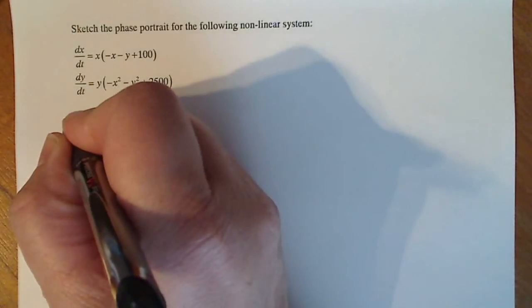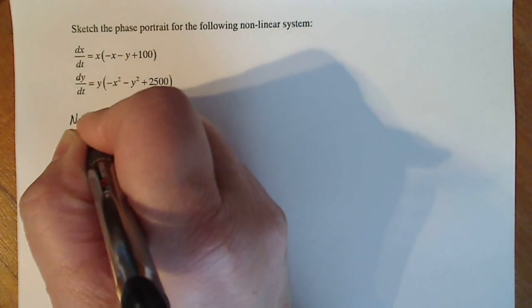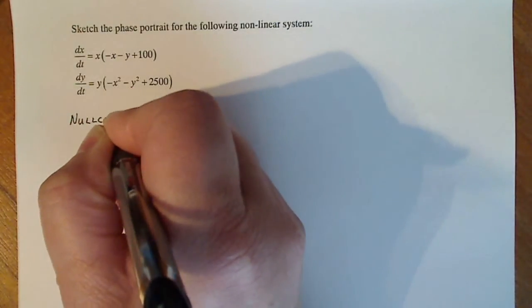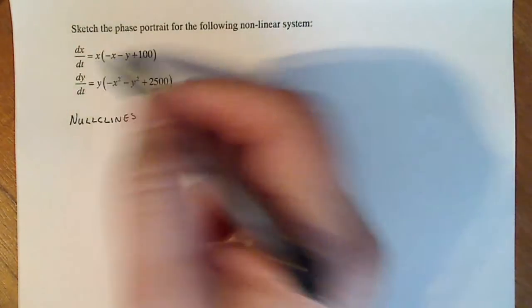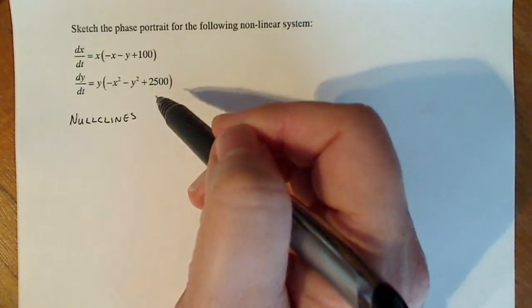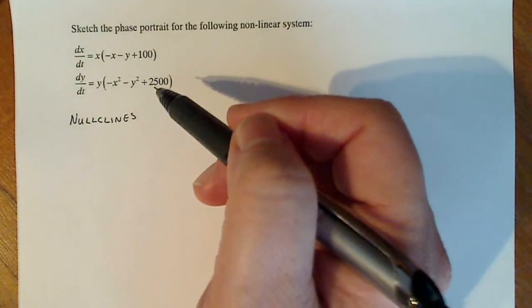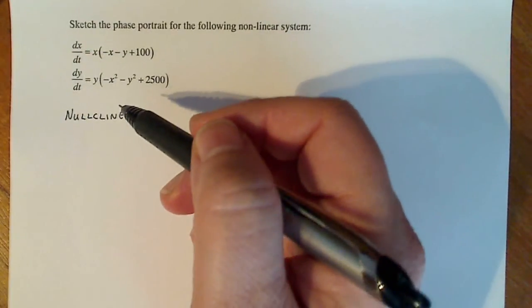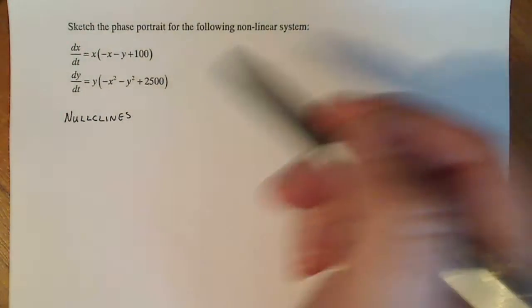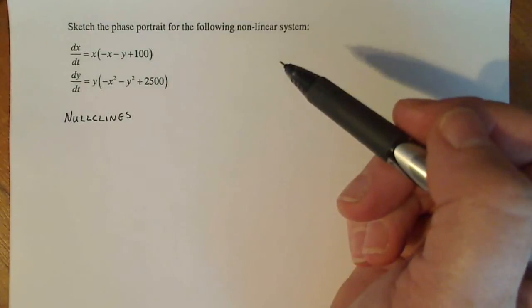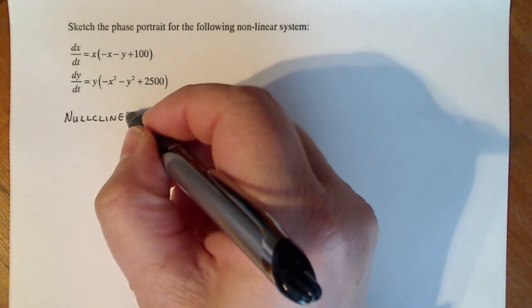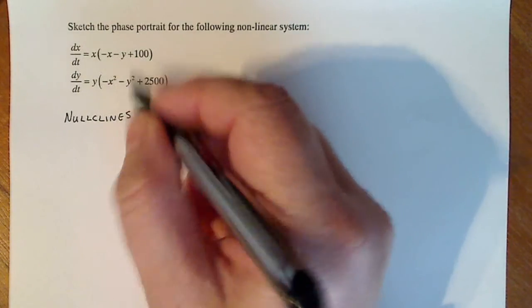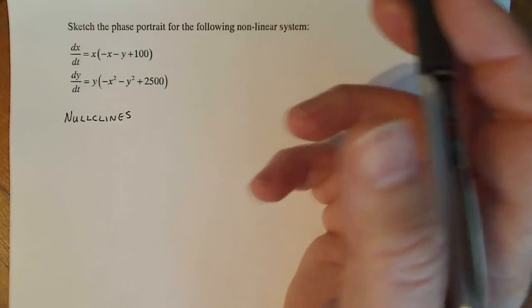The first thing I do is start with the nullclines, because that is just the easiest thing to think about. The nullclines occur when dx/dt equals zero and dy/dt equals zero, not at the same time like equilibrium solutions. The nullclines are the lines where the vectors in the vector field are strictly vertical or strictly horizontal, and this gives us guidance on how the solutions move around the phase plane.